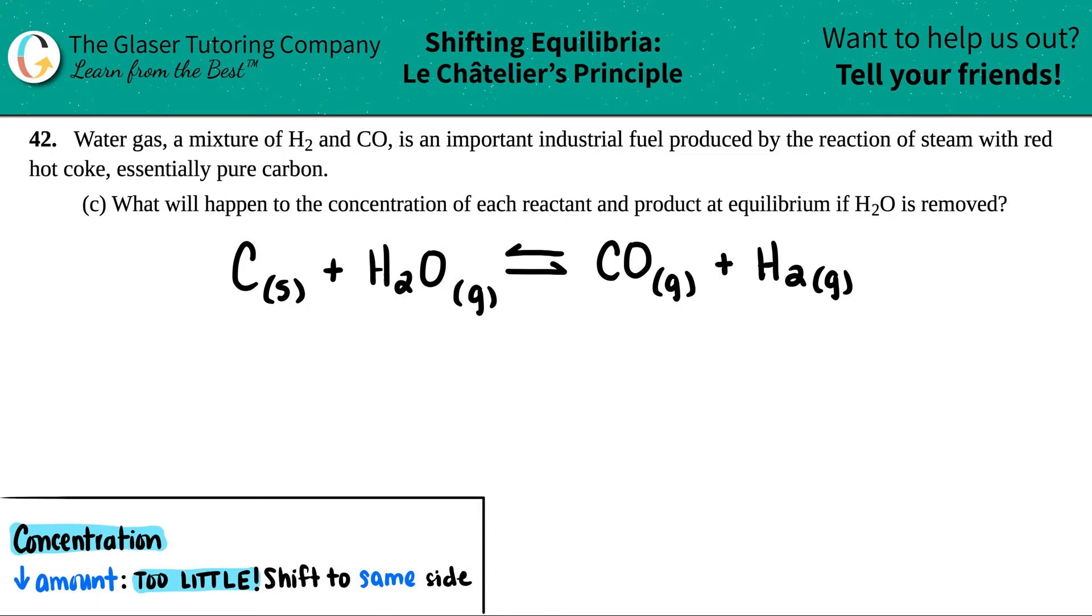Number 42: Water gas, a mixture of H2 and CO, is an important industrial fuel produced by the reaction of steam with red hot coke, essentially pure carbon. Letter C asks: what will happen to the concentration of each reactant and product at equilibrium if H2O is removed?